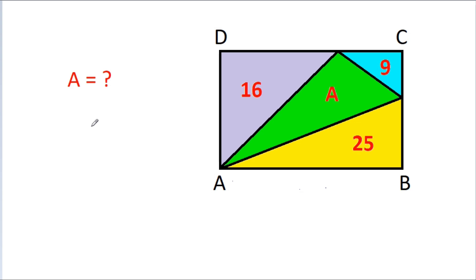In this video, ABCD is a rectangle. The area of the yellow part is 25, the area of the blue part is 9, the area of the gray part is 16, and we have to find the area of the green part.